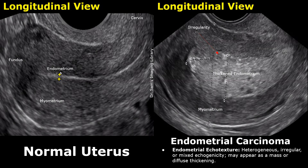These images are transvaginal images, which provide better detail. In the normal uterus, the echogenic endometrium appears as a smooth curvilinear structure, and the second thick layer is the myometrium. The upper part of the uterus is on the left in this longitudinal image — the fundus — and the cervix is the lower part of the uterus, seen on the top right side in this image.